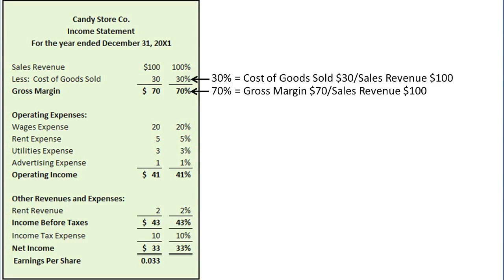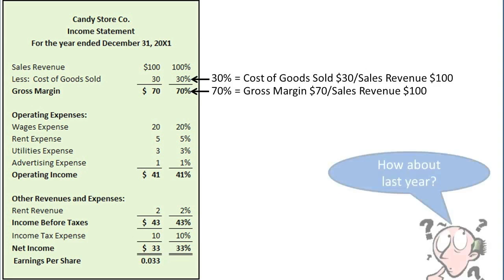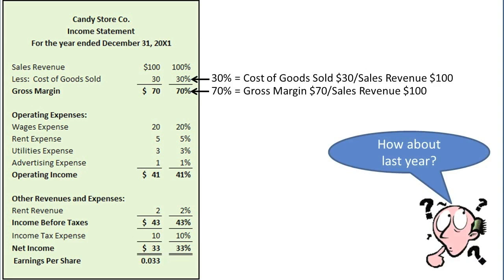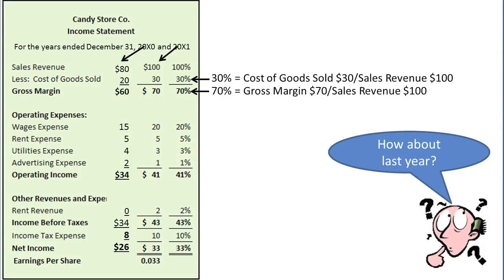In order to gain greater insight into this company, an analyst would want to compare Candy Store's 70% gross margin in the current year to Candy Store's gross margin ratio from its prior years to see whether it is on a positive or negative trend. To make such a comparison, we would need Candy Store's prior year income statement figures. When a single income statement includes amounts for more than one accounting period, it is called a comparative income statement. We will discuss how to use comparative income statements in more detail in the next topic.